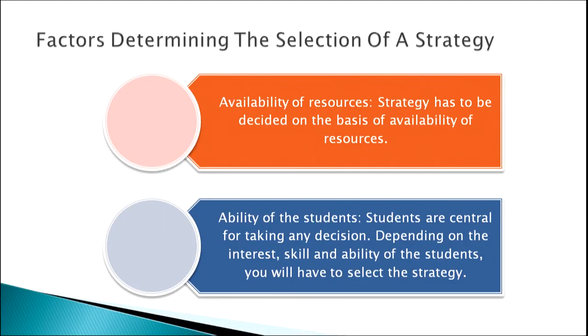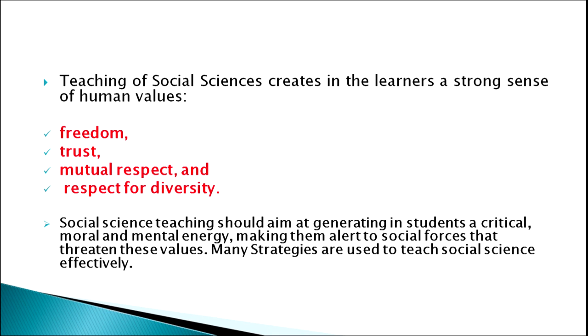Another key factor is the ability of students — students are central to any decision. Depending on the interest, skill, and ability of students, you select the strategy. Teaching of social sciences also creates in learners a strong sense of human values, including freedom, trust, mutual respect, and respect for diversity — social values that need to be inculcated while teaching social sciences.